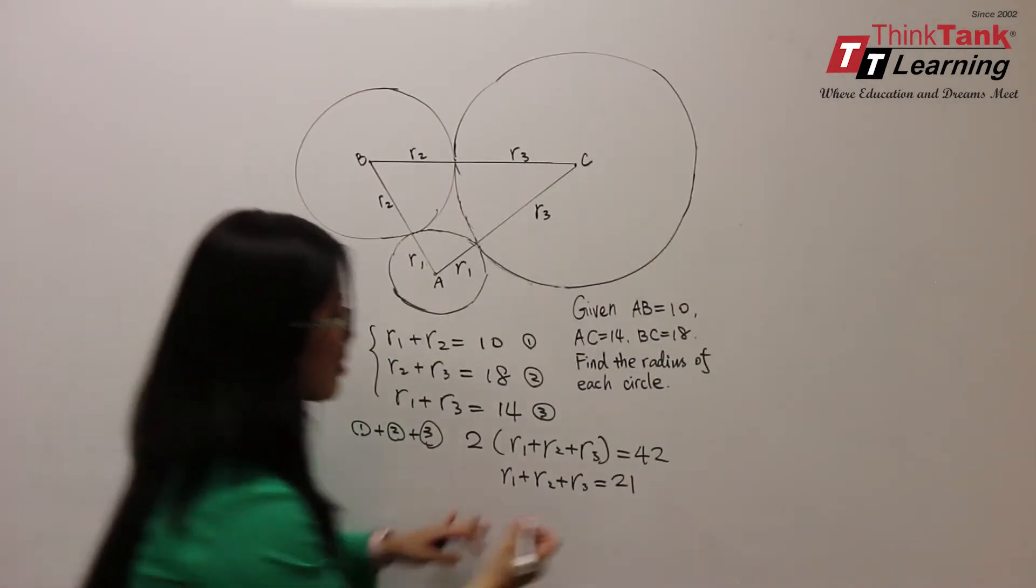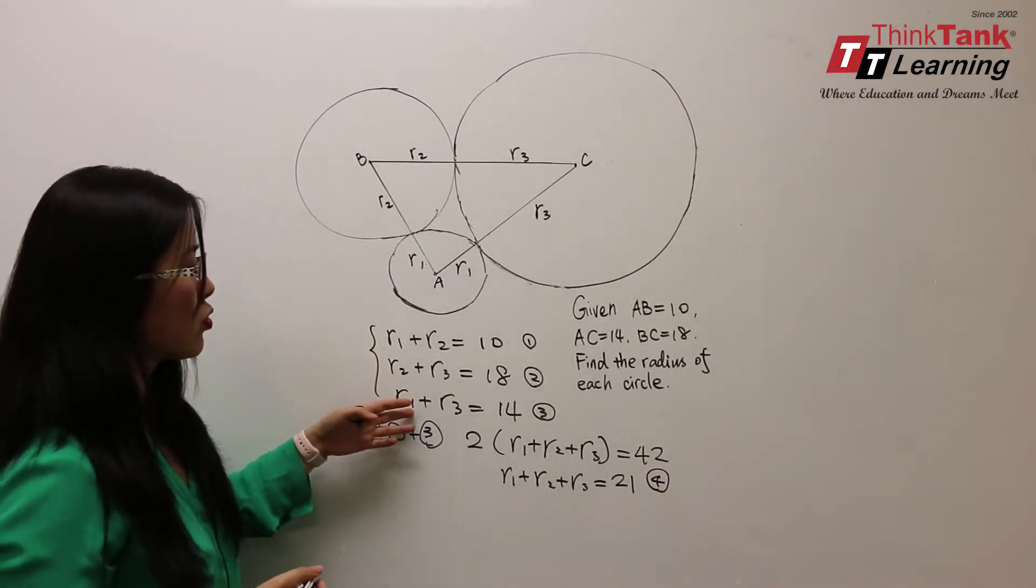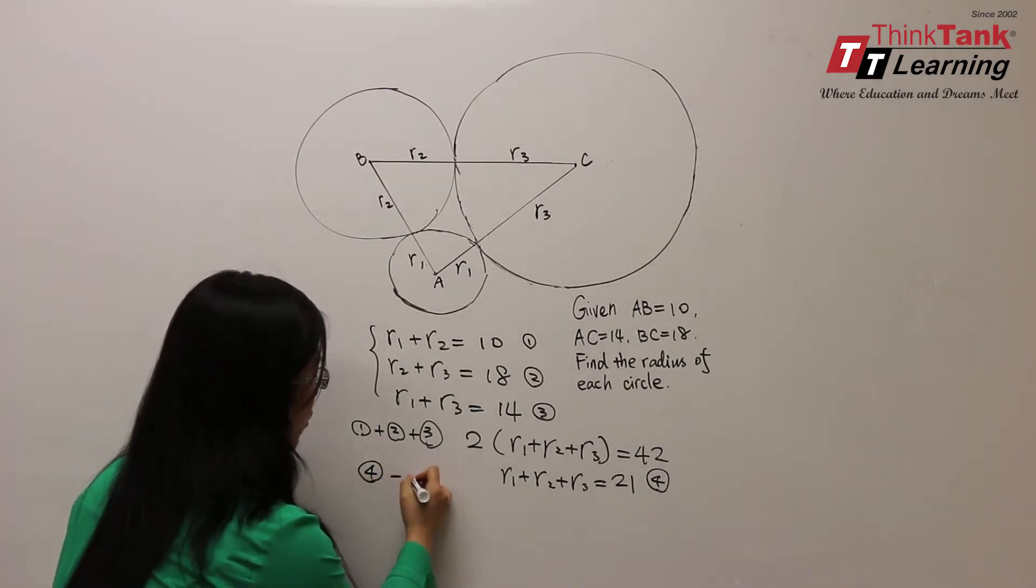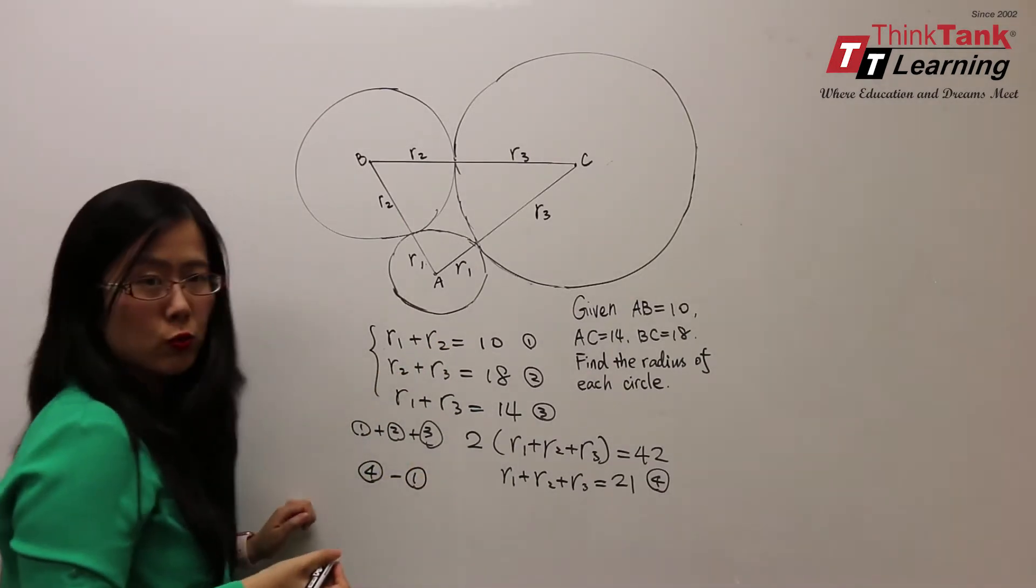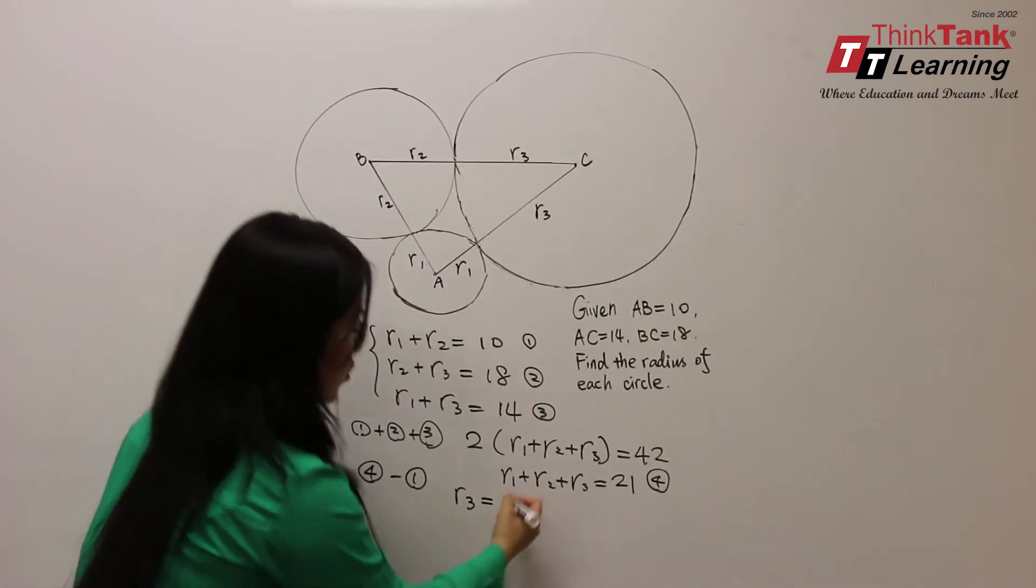And then I can use this equation to subtract each one of the equations to solve for the radius individually. I can use equation 4 minus equation 1 to get R3 equals 3.